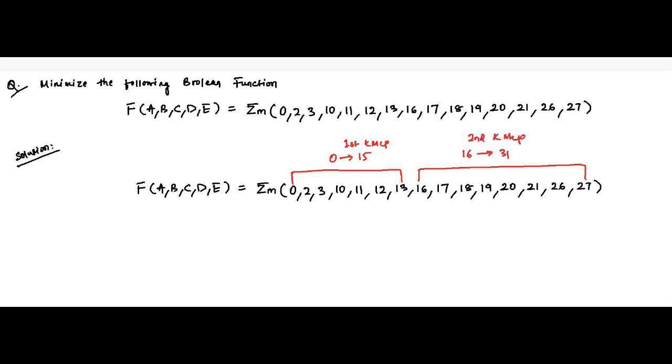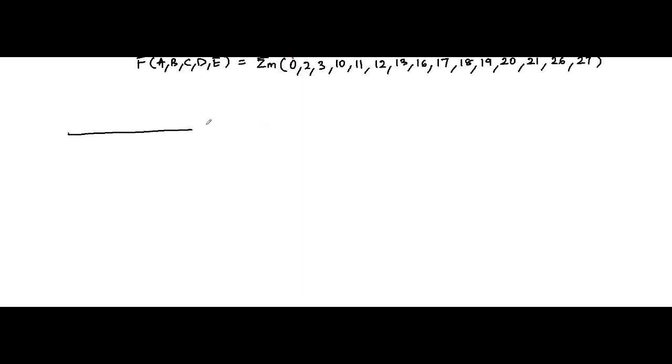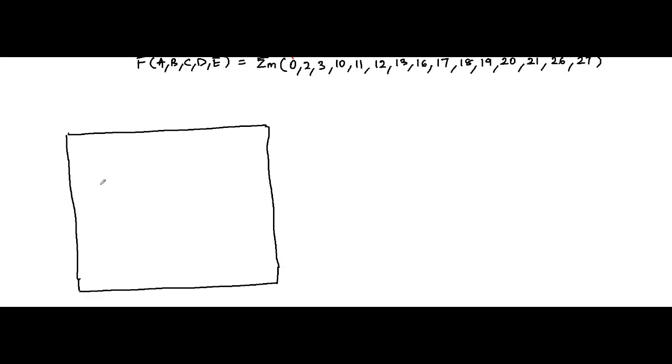All we have to do is draw the K-map and plot the values. B, C, D, E will be the axes — A will be taken common, giving us A-bar and A for the two K-maps.